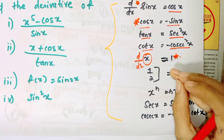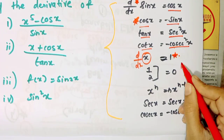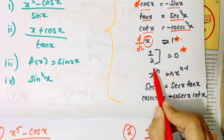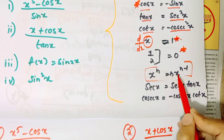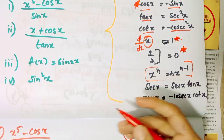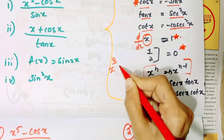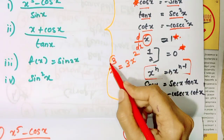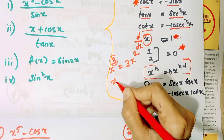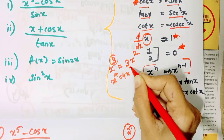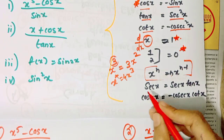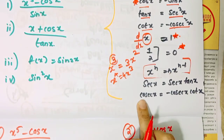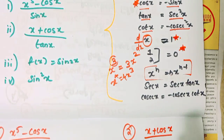Let's look at the power rule — numbers 1, 2, 3, 4. The formula is: d by dx of x raised to n is equal to n times x raised to n minus 1. The values also include minus cos x and cot x.